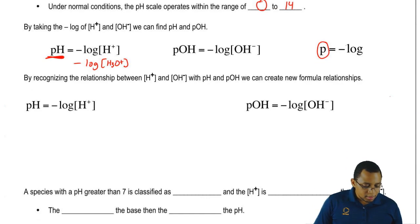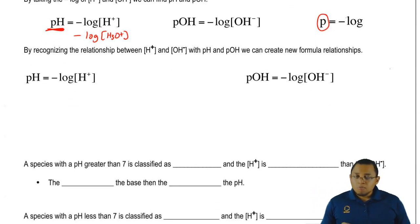And what we should realize here is that by recognizing the relationship between H positive and OH minus, we can find a new way to express them in terms of pH and pOH.